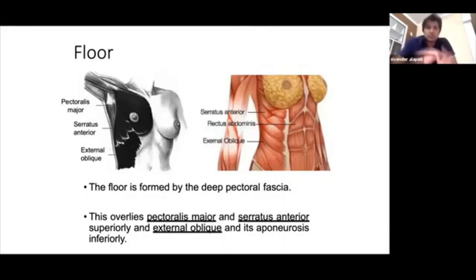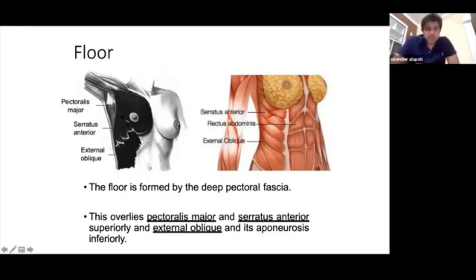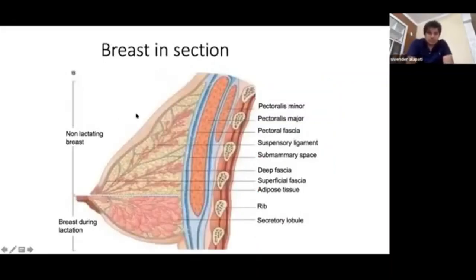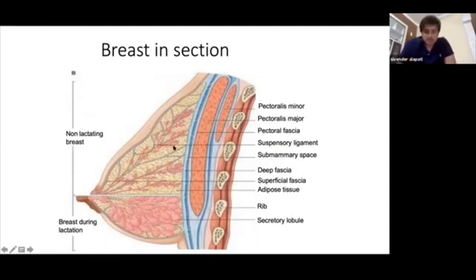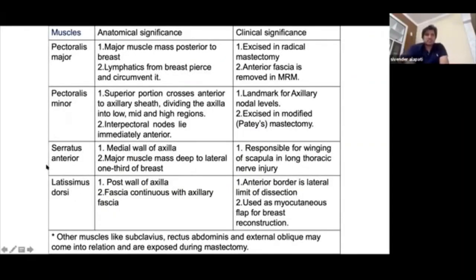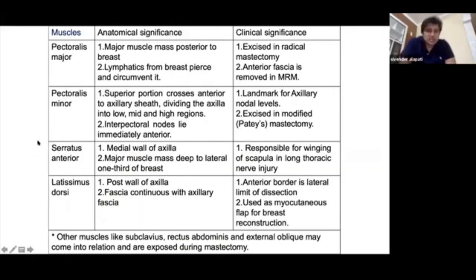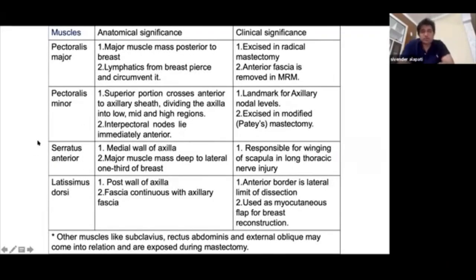These muscles are highly prone to infiltration and form an important landmark from an anatomy standpoint, where options may state 'all the following are true except,' with one option pertaining to pectoralis major or serratus anterior or external oblique forming the base. During lactation, all lobules are increased in size, whereas in the non-lactating period, there is more fat and dense fibrous tissue with rudimentary ducts and lobules.